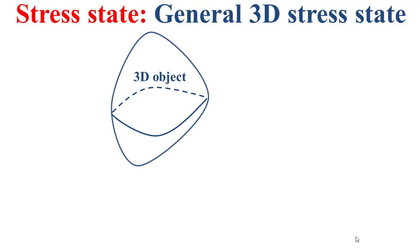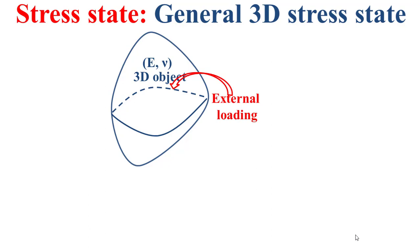Let's consider a 3D object with a certain shape and certain dimensions, and also certain mechanical properties summarized by the Young's modulus and the Poisson's coefficient. Let's consider an external loading applied on this 3D object. In this situation, a distribution of internal 3D stress state will be created through this 3D object, meaning that at any point of this 3D object we will have a 3D stress state.